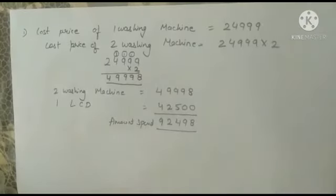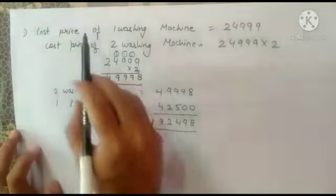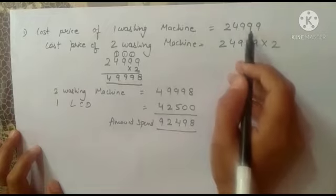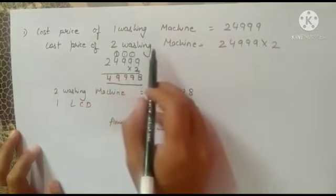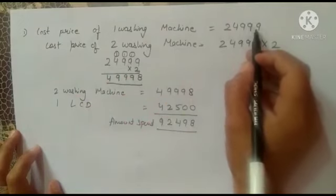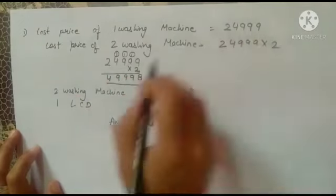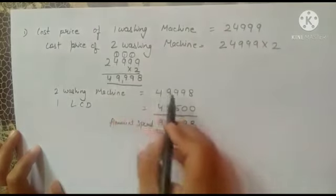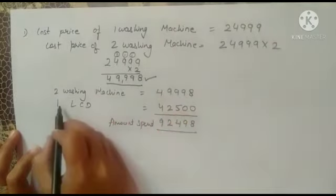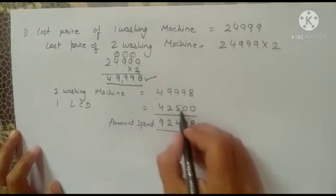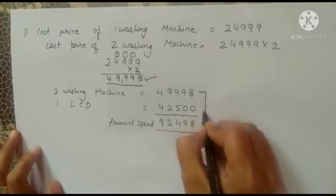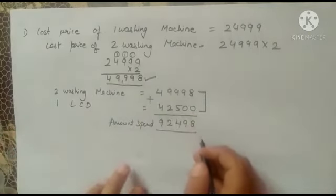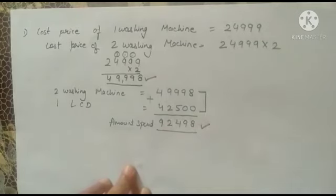Students, let me start the answer. The cost price of one washing machine is Rs. 24,999. The cost price of two washing machines — we multiply 24,999 by 2 — is Rs. 49,998. One LCD costs Rs. 42,500. We add both amounts to find how much Charanjit has spent in total.